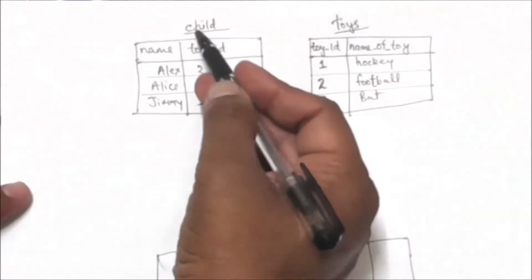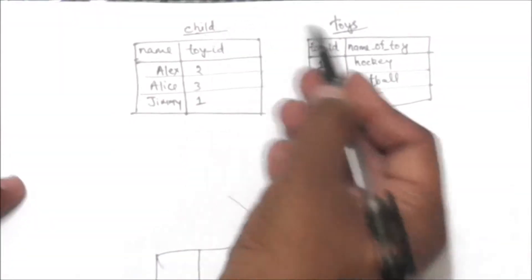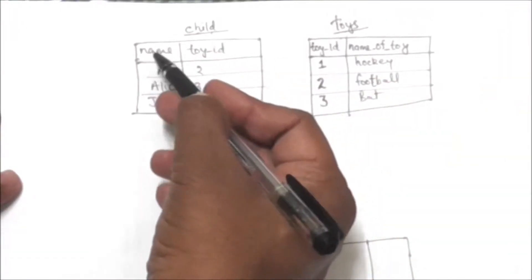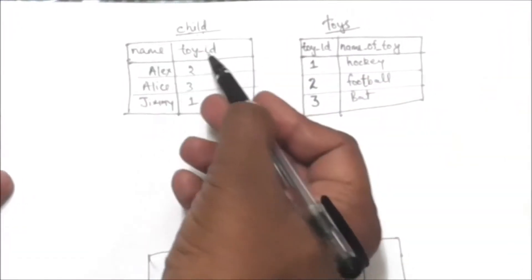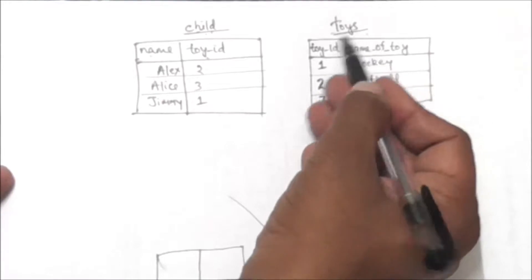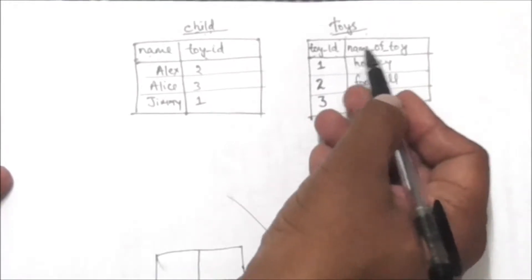Hello friends, welcome back. Now see these two tables — this is the child table and this is the toys table. The child table has two columns: name and toy_id. The toys table also has two columns: toy_id and name of toy.